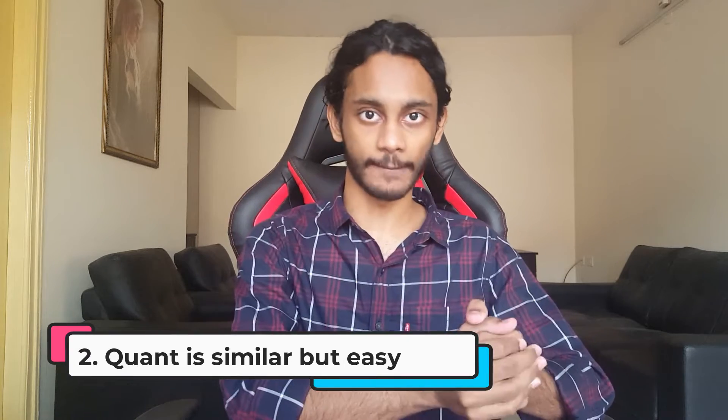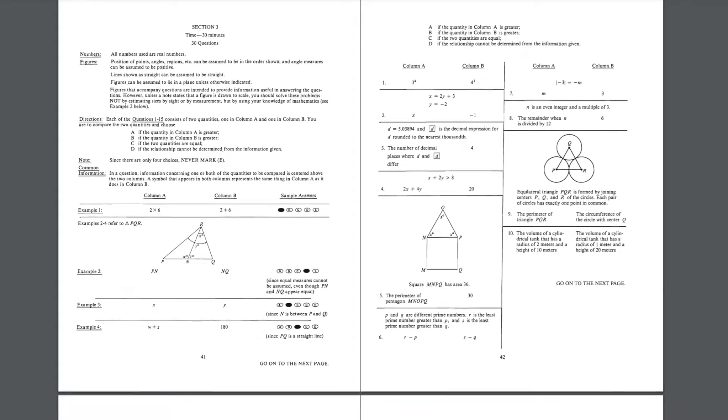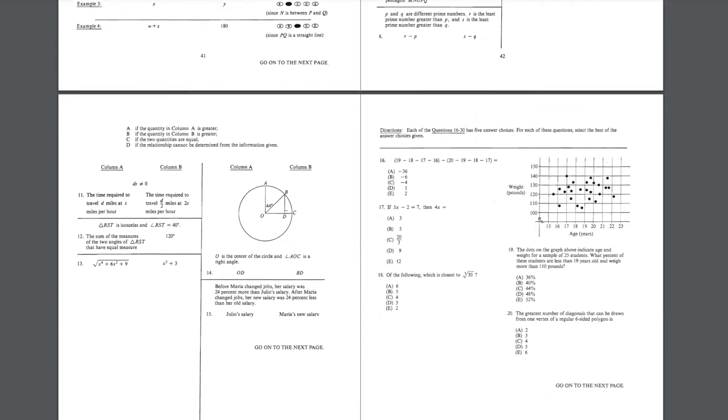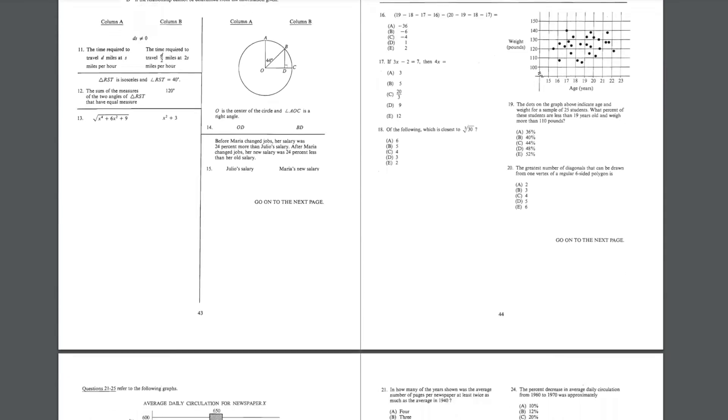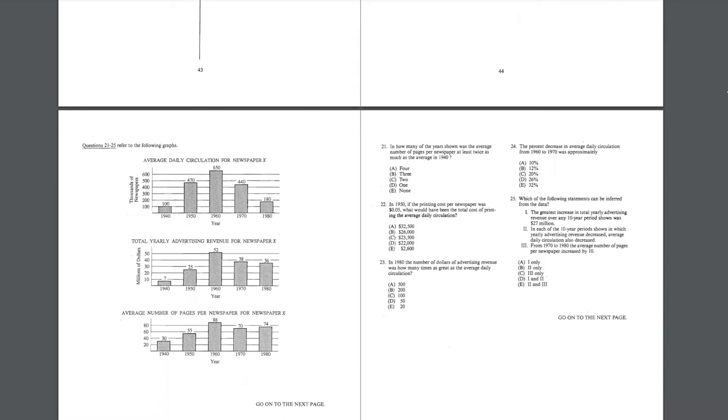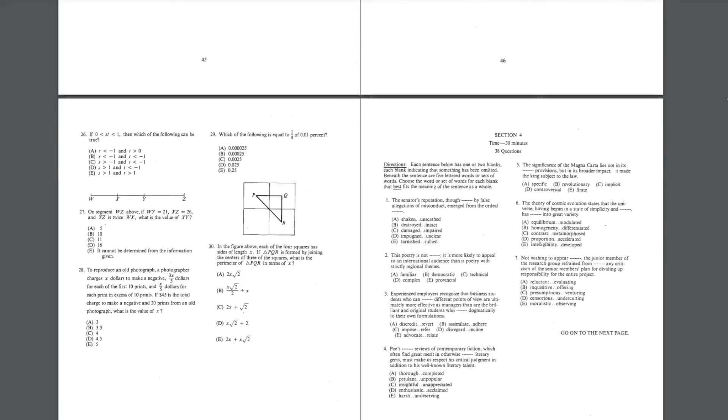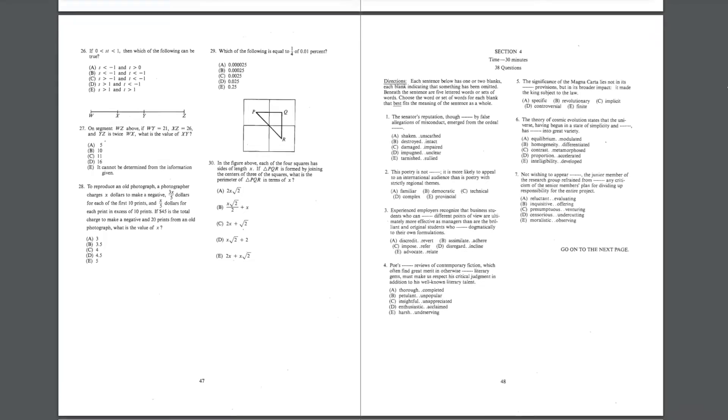The second thing is about quantitative reasoning. The topics in the quant section — ratios, geometry, probability — are pretty much the same as in the current GRE. However, the quant questions in the Big Book are not as tough as what you'll face on the actual exam. You can use the Big Book to practice easy questions, but for tough quant questions you're going to need to find another resource.